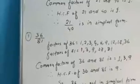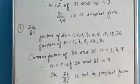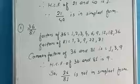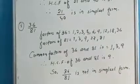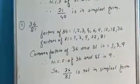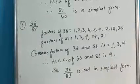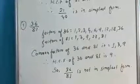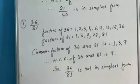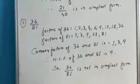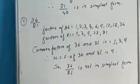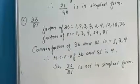Okay, now isse hum log ek aur example se samajhte hain. Yahan par numbers hain 36 and 81. To yahan par hum log 36 ke factors likhenge: 1, 2, 3, 4, 6, 9, 12, 18, 36. And 81 ke factors hote hain: 1, 3, 9, 27, and 81. To ab agar hum log ismein common factor dekhein to 36 and 81 mein common factors hain 1, 3, and 9.